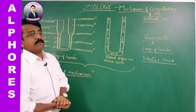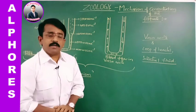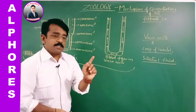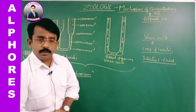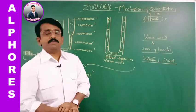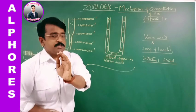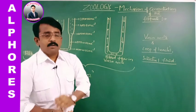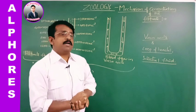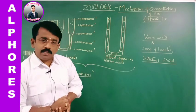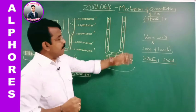The selective reabsorption at PCT: almost 70% of water and electrolytes are absorbed, for which the PCT cells perform active and passive transport. This is because of microvilli and mitochondria. Water to a large extent and electrolytes are absorbed. Besides that, nutrients are absorbed. The point to remember is the filtrate formed at the Bowman's capsule is far more dilute than the hypertonic urine formed at the collecting duct.